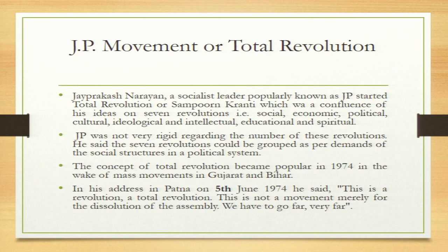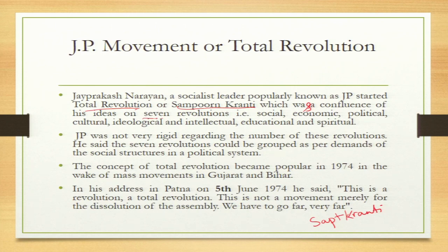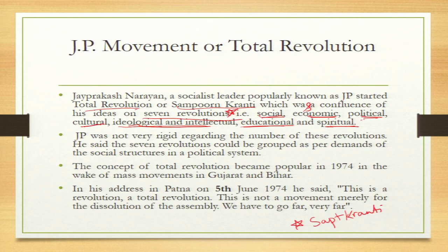Let us discuss the JP movement, also called total revolution. Jaiprakash Narayan was a socialist leader popularly known as JP. He started the total revolution — Sampurna Kranti — also called Sapt Kranti, a confluence of seven revolutions. The seven revolutions are: social, economic, political, cultural, ideological and intellectual together, educational, and spiritual. JP said the society needs to undergo a revolution in which these seven revolutions go on together — then only will we be able to fight the corruption so prevalent in Indian society.